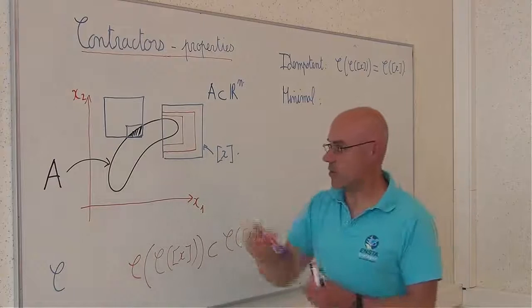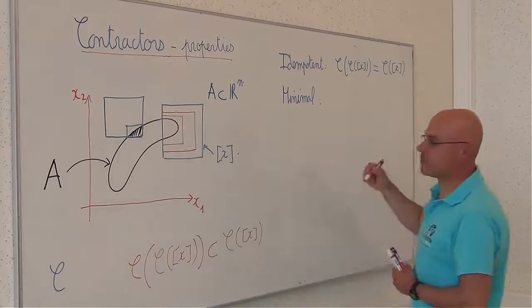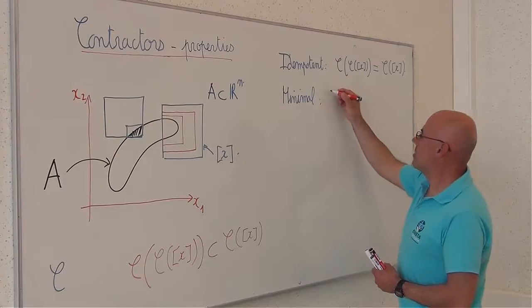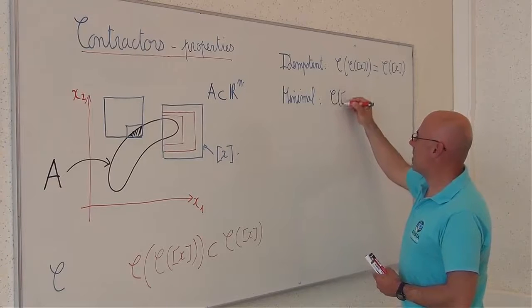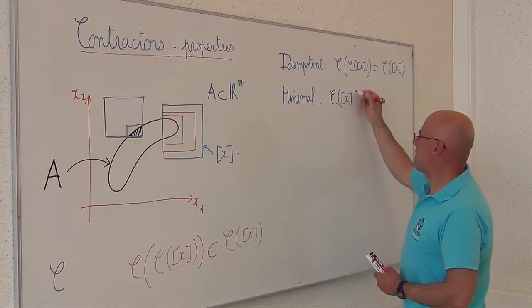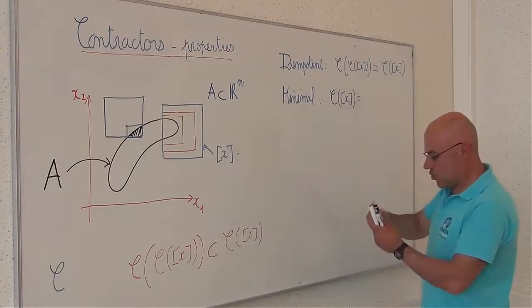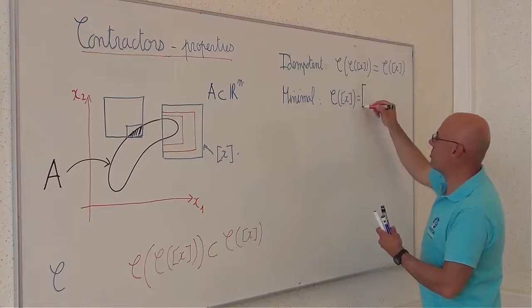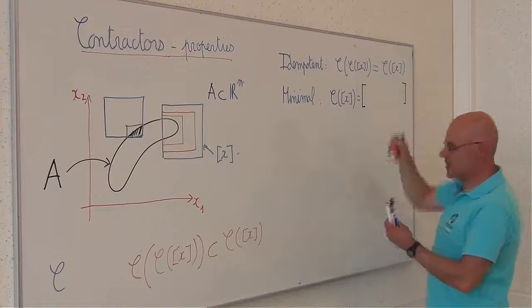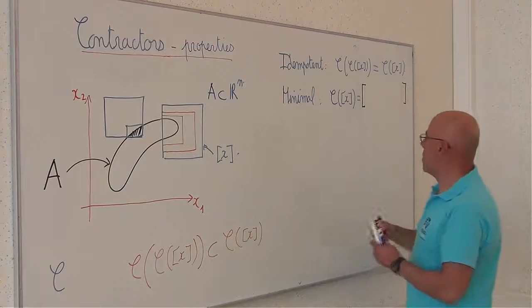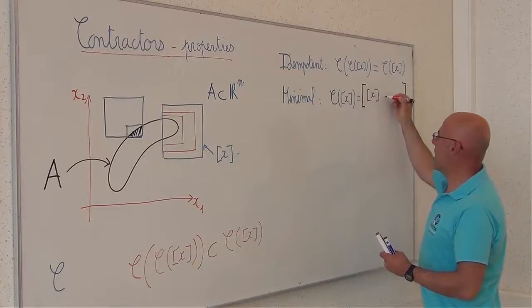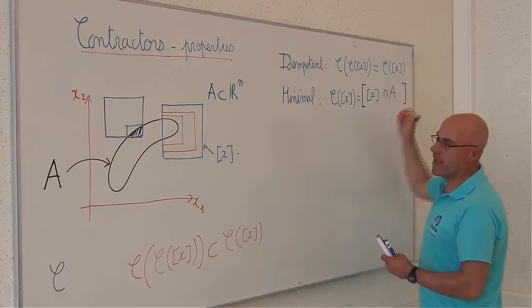So, the contractor is said to be minimal if the contraction of X corresponds to the smallest box. So, recall that this operator means the smallest box which contains the intersection between X and A.